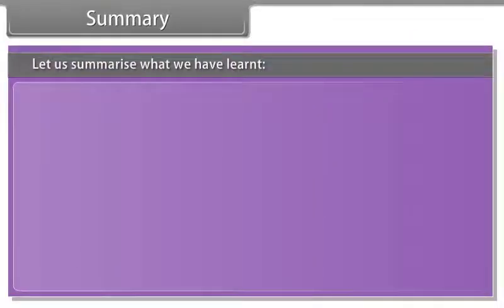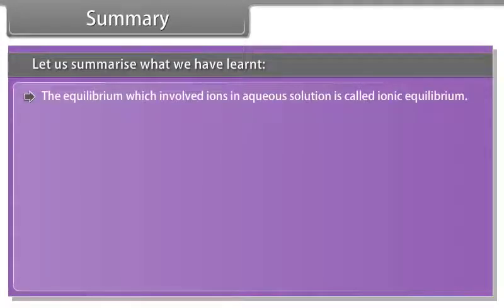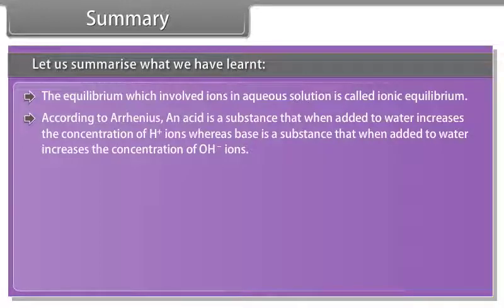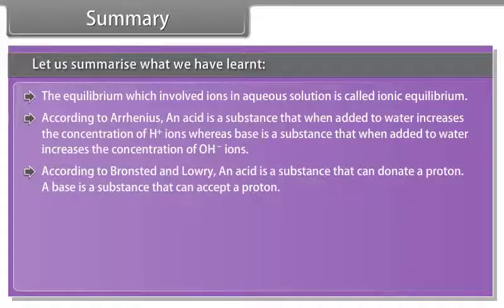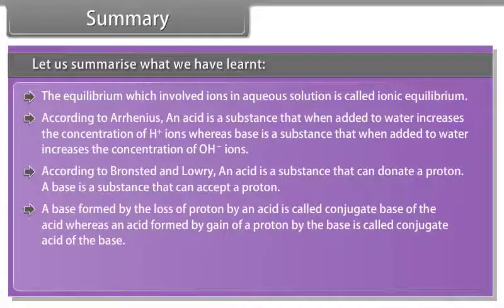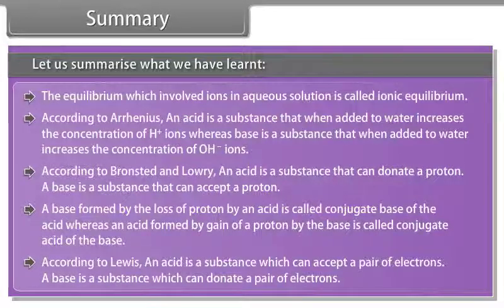The equilibrium which involves ions in a solution is called ionic equilibrium. According to Arrhenius, an acid increases the concentration of H⁺ ions in water and a base increases the concentration of OH⁻ ions. According to Bronsted and Lowry, an acid can donate a proton and a base can accept a proton. A conjugate base is formed by loss of a proton by an acid; a conjugate acid is formed by gain of a proton by a base. According to Lewis, an acid accepts a pair of electrons and a base donates a pair of electrons.